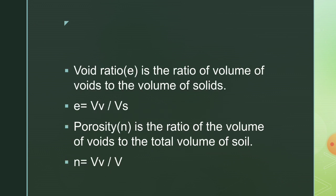Void ratio is the ratio of volume of voids to the volume of solids: E = Vv / Vs. Porosity, denoted by N, is the ratio of the volume of voids to the total volume of soil: N = Vv / V.